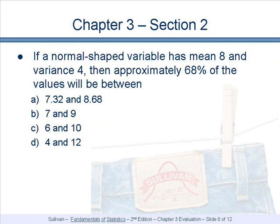If a normal-shaped variable has a mean 8 and variance 4, then approximately 68% of the values will be between. Recall the empirical rule states that if you have a bell-shaped distribution, 68% of the values are within one standard deviation of the mean.